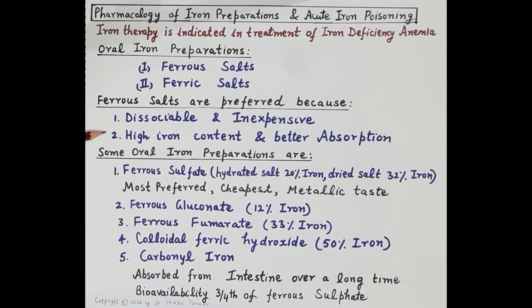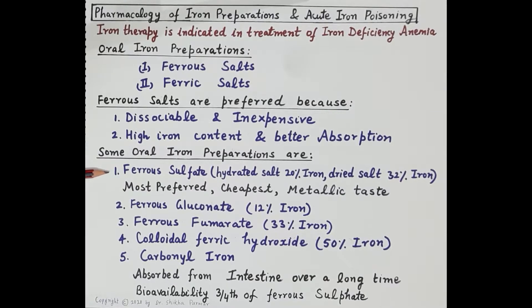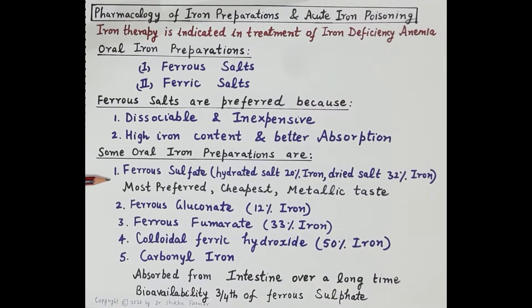Some oral iron preparations include ferrous sulfate. Hydrated ferrous sulfate contains 20% iron, while dried ferrous sulfate contains 32% iron. Ferrous sulfate is the most preferred oral preparation — it is the cheapest, but it often produces a metallic taste in the mouth.